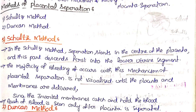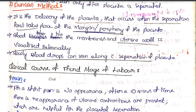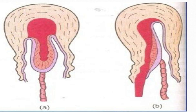Since the inverted membranes catch and hold the blood, the gush of blood is seen only after the placenta is fully separated. In the Duncan method, delivery of the placenta occurs when separation first takes place at the margin or periphery of the placenta. Blood escapes between the membranes and the uterine wall and is visualized externally, whereas in the Schultze method separation starts at the central point.